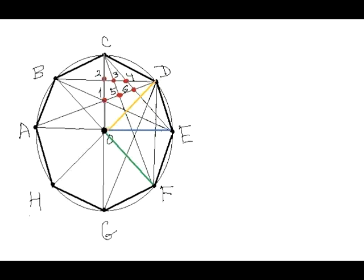That crosses the interior of sector COD. However, it is easy to see that it is symmetric to diagonal DA with respect to the vertical diameter CG.